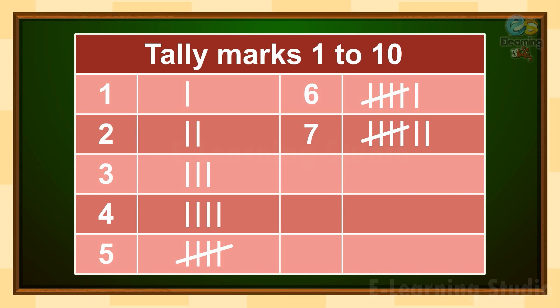Now how do we represent number 8? Draw 4 vertical lines: 1, 2, 3, 4, then make a slanting line for 5. Then draw 3 more vertical lines for 6, 7, and 8.